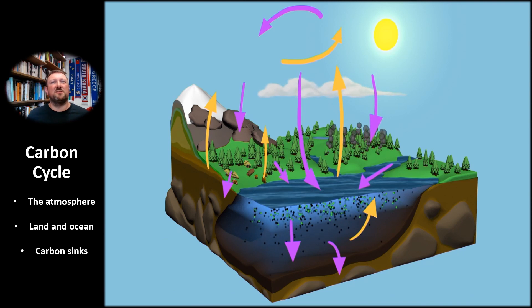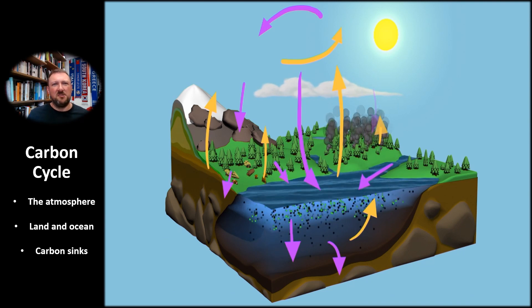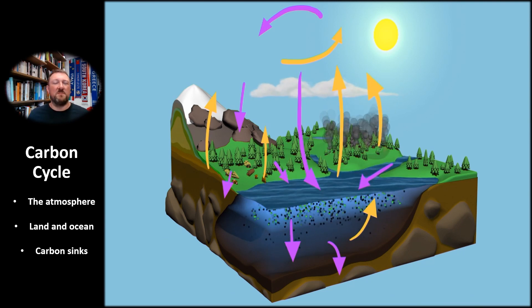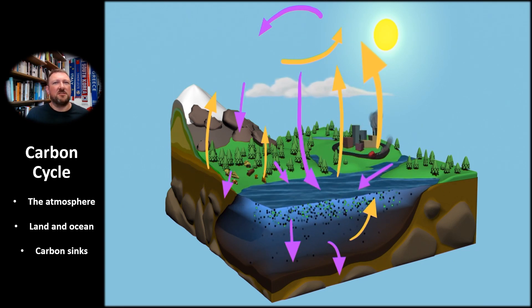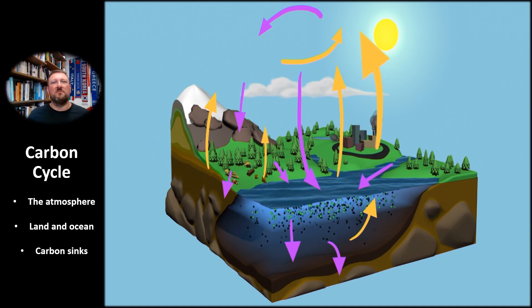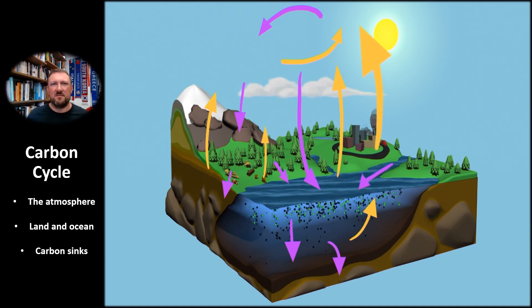The ocean also functions as a carbon sink. At the ocean surface, carbon dioxide from the atmosphere dissolves into the water, and tiny marine plants called phytoplankton use the carbon dioxide for photosynthesis, just as terrestrial plants do. After marine animals eat phytoplankton, they either breathe out the carbon or pass it up the food chain. When phytoplankton die and decompose, their carbon atoms are either recycled into the surface waters or sink to the sea floor and become buried in marine sediment.